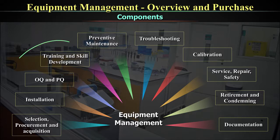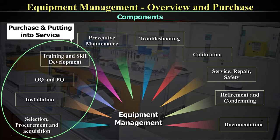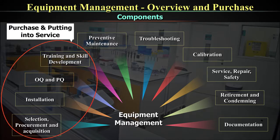The first cluster covers purchase and putting into service, and includes multiple components: selection, procurement and acquisition; installation qualification; operational qualification; performance qualification; and training and skill development. These four components are the primary and initial parts of an Equipment Management program — how you acquire equipment, how you install it, how you assure its performance, and how staff are trained to use it optimally.